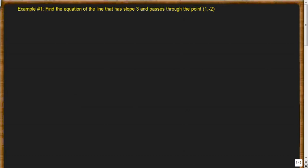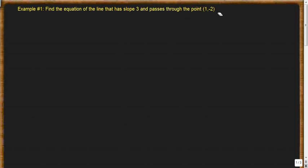Let's look at some example problems for lines, linear models, and slopes. The first question says: find the equation of the line that has a slope of 3 and passes through the point (1, -2).